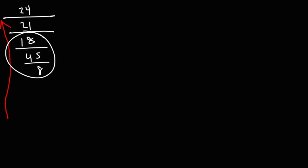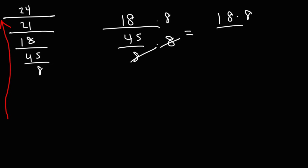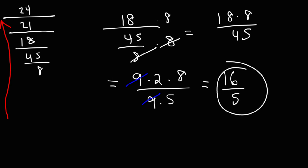So let's simplify that complex fraction. So we have 18 divided by 45 over 8. So let's multiply the top and the bottom by 8. So we have 18 times 8 over 45. Now this we could simplify. 18 is 9 times 2. 45 is 9 times 5. So we could cancel a 9. And then we have 2 times 8, which is 16, over 5.